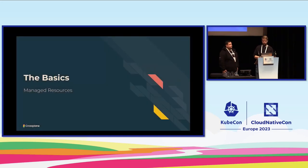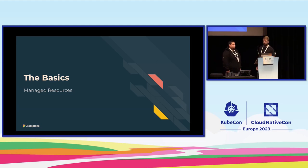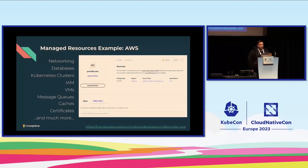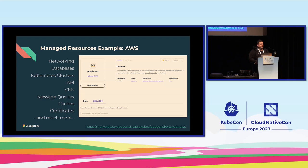So let's start at the bottom layer and work our way up. The fundamental basics of Crossplane start with managed resources — these can be anything outside of the Kubernetes cluster if it has an API. Looking at one of the providers in the ecosystem, the AWS provider, we can manage hundreds of objects outside of the Kubernetes cluster: networking, databases, Kubernetes clusters — all managed in the Kubernetes way. That's the core idea of Crossplane.